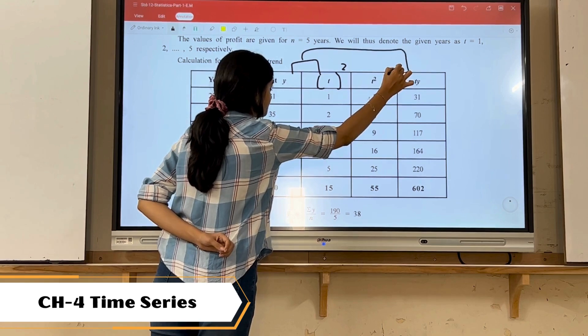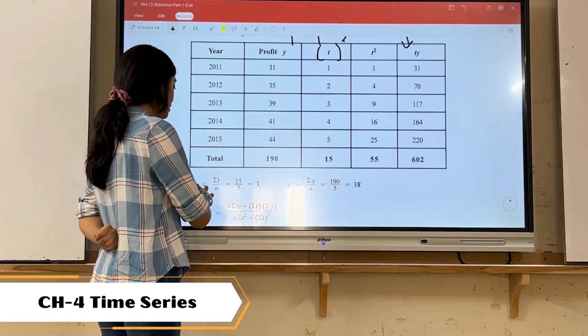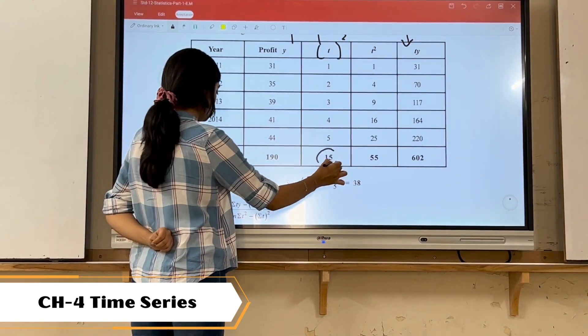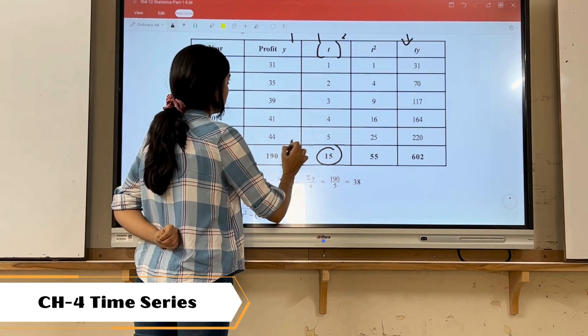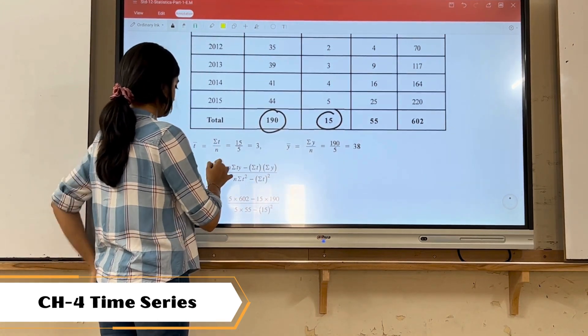Then we will get the value of t bar, that is mean sigma t upon n. By the total of this, we got y bar, that is sigma y upon n.